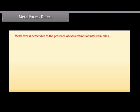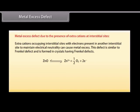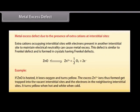Metal excess defect can also be due to the presence of extra cations at interstitial sites, with electrons present in neighboring interstitial sites to maintain electrical neutrality. This defect is similar to the Frenkel defect and is formed in crystals having Frenkel defects. For example, when ZnO is heated, it loses oxygen and turns yellow. The excess Zn²⁺ ions formed get trapped into vacant interstitial sites along with electrons in neighboring interstitial sites. It turns yellow when hot and white when cold.